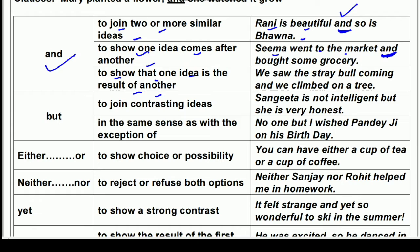'And' is also used to show that one idea is the result of another. For example, 'we saw the stray bull coming and we climbed on a tree.' A stray bull means an animal wandering on the roads. We saw it coming toward us, so we climbed up a tree. The conjunction 'and' joins the cause and its result into a single sentence.